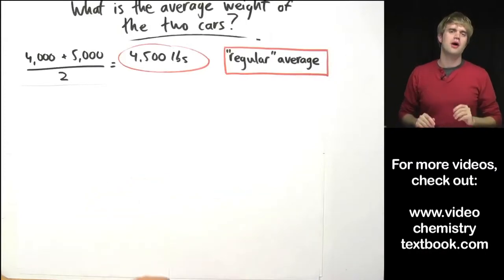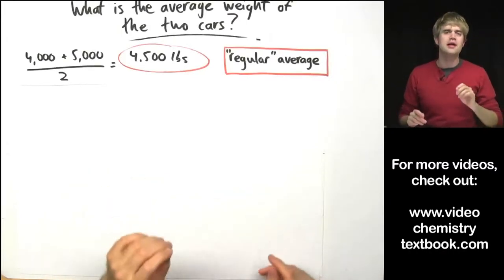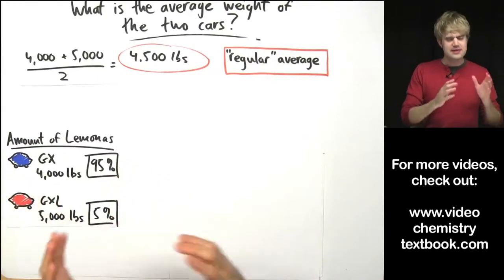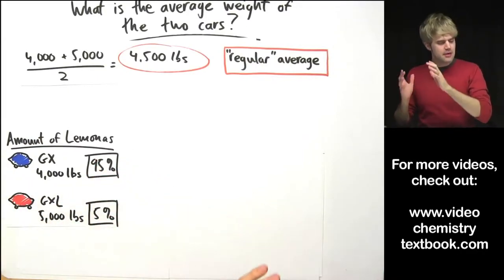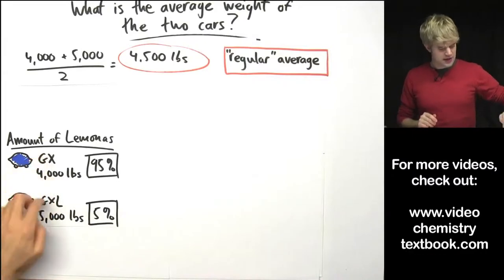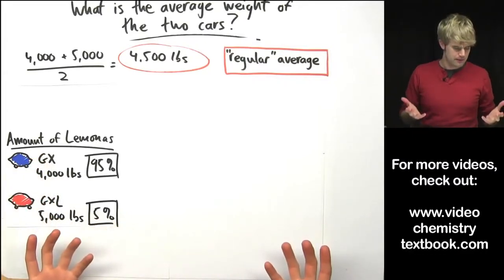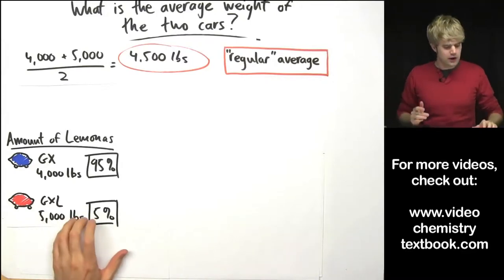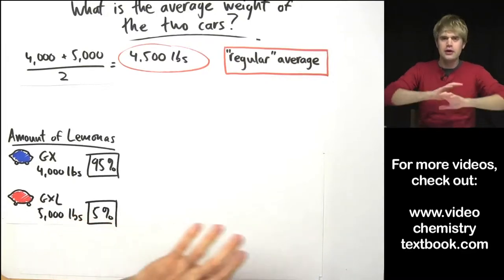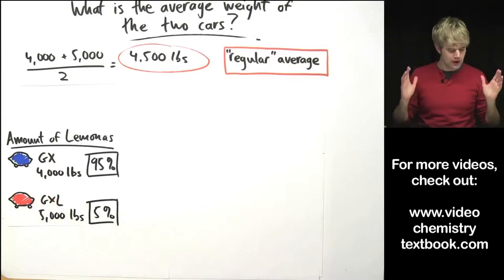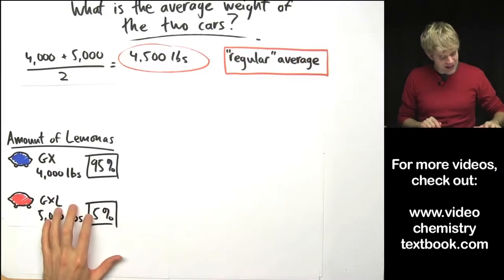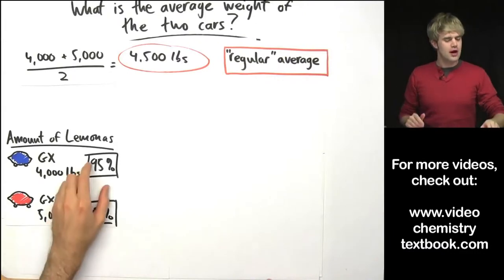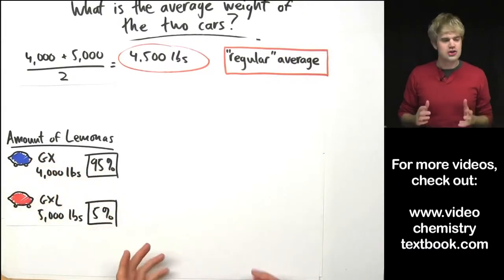Now what if I made this problem a little bit more complicated by giving you some extra information. Let's say that there aren't the same number of GXs and GXLs out there. Maybe because the GXL is a little bit more expensive, there are a lot fewer of them. So if we look at all the Lamonas that have been sold everywhere, only 5% of them are GXLs whereas the vast majority, 95% of them are GXs.